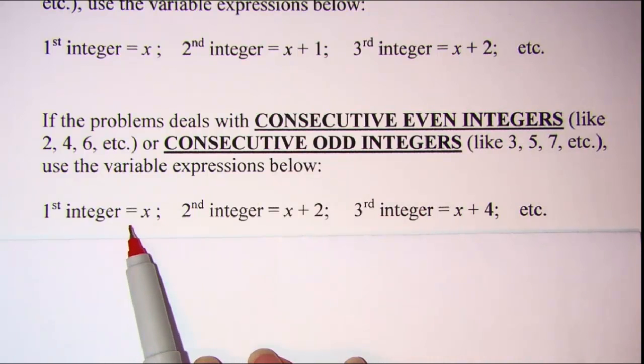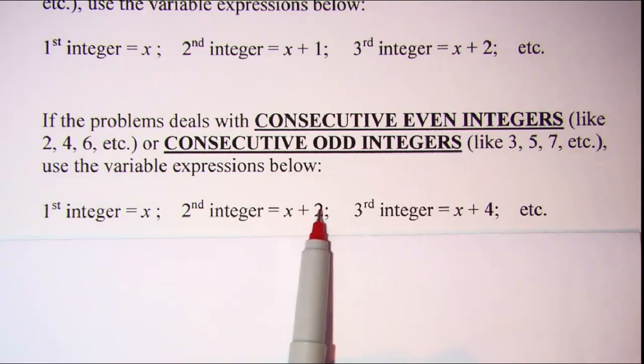You'll always start with x as your first integer and then add 2 to that to get your next even or your next odd integer. Add 2 to this one to get to the next one and so forth.